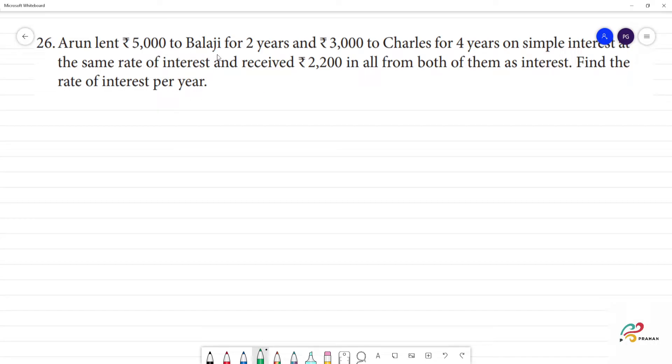Arun lent 5,000 rupees to Balaji for 2 years and 3,000 to Charles for 4 years on simple interest at the same rate, and received 2,200 in all from both of them as interest. Find the rate of interest.